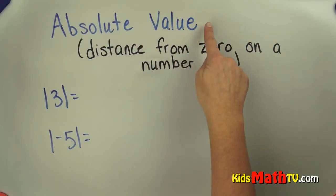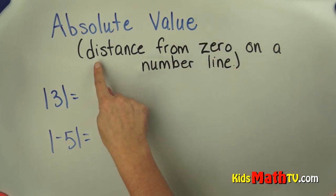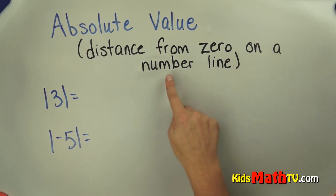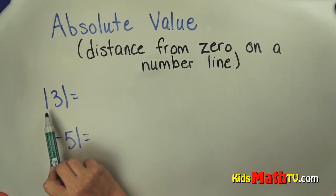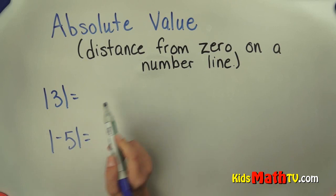In this lesson, you will learn about absolute value. The definition of absolute value is simply the distance from zero on a number line. These straight up and down lines are the symbol for absolute value. So this problem asks, what is the absolute value of three?